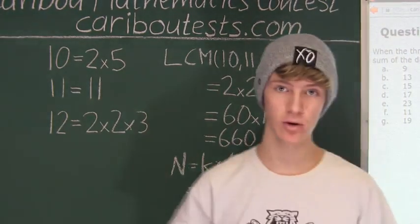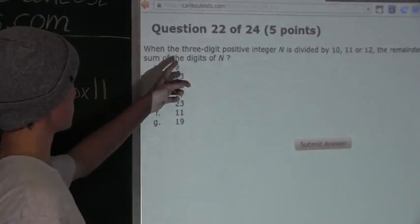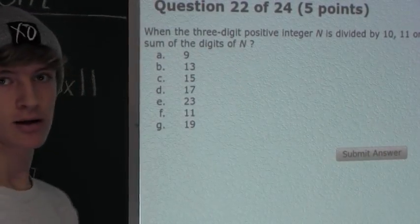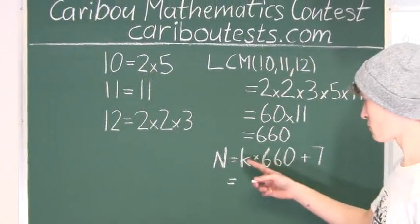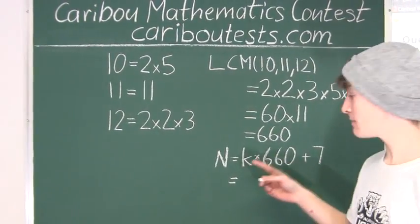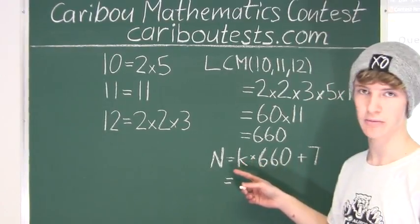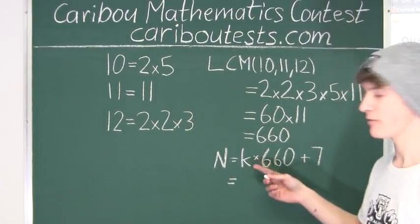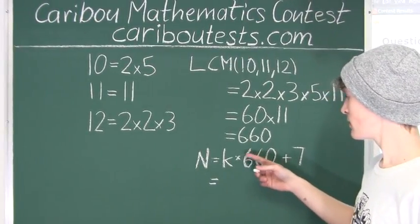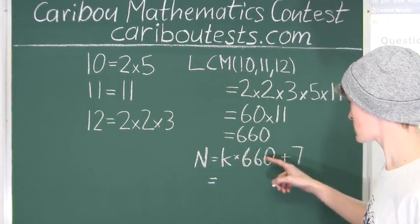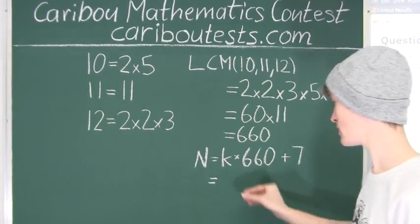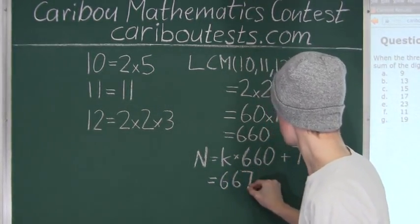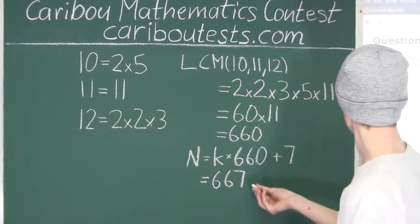Okay. Now, from the question, it says when the three-digit positive integer N... for this to be a three-digit number, k must be 1, because as soon as k becomes 2, that's already a thousand and whatever, which is a four-digit number. So k must be 1, and that means that 660 plus 7 is 667. Therefore we know N is equal to 667.